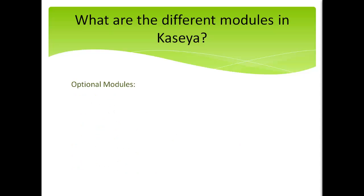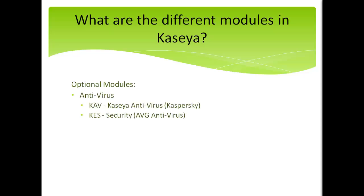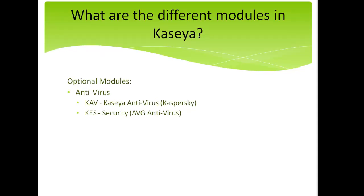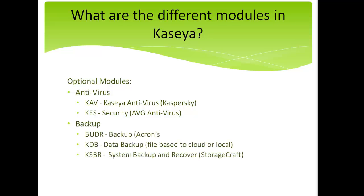These are some of the optional modules you may run across. Kaseya has two different antivirus products: Kaspersky, which is called KAV or Kaseya Antivirus, and AVG, which is called KEZ or Kaseya Endpoint Security. There are also a number of backup options, including the Backup Module or BUDR — B-U-D-R — which uses the Acronis software; Kaseya Data Backup, which backs up files locally or to the cloud; and a new module called System Backup and Recovery, which uses StorageCraft as the backup engine. Kaseya also has an anti-malware product which allows you to install and manage Malwarebytes anti-malware.